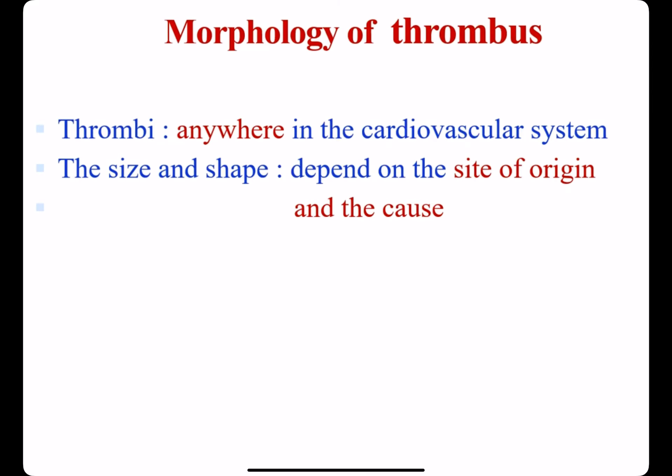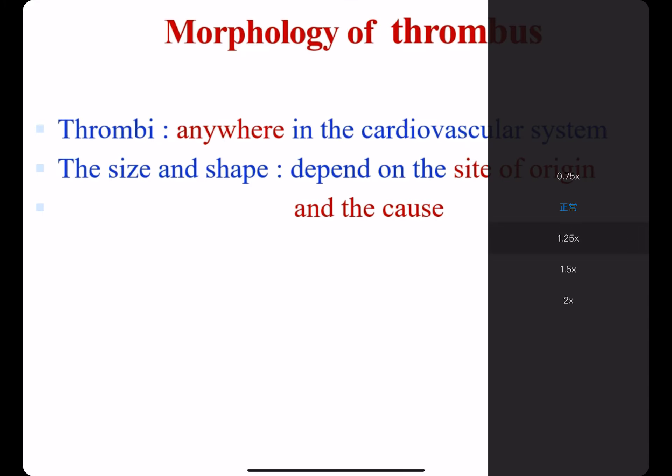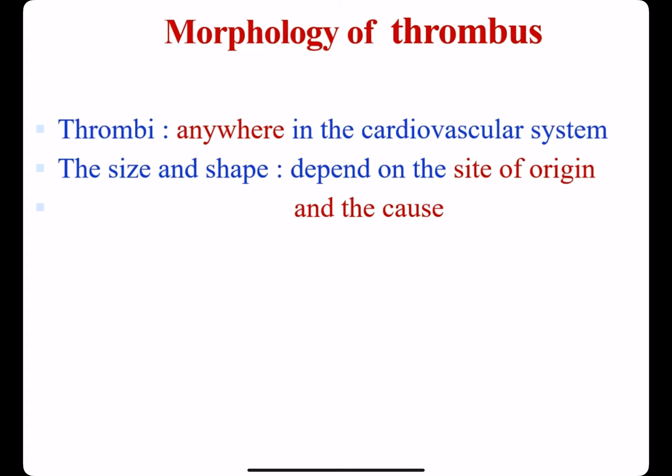Thrombus can develop anywhere in the cardiovascular system. For example, in cardiac chambers, on valves, or in arteries, veins, or capillaries. The size and shape depend on the site of origin and the cause.